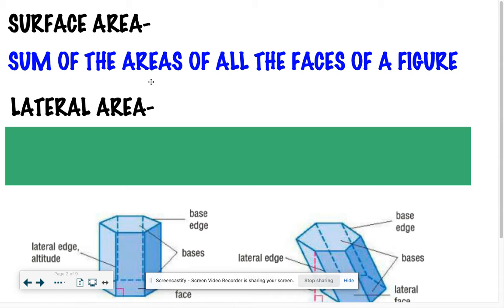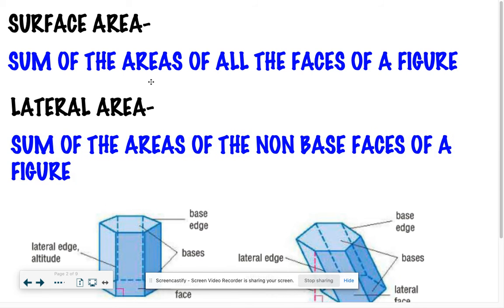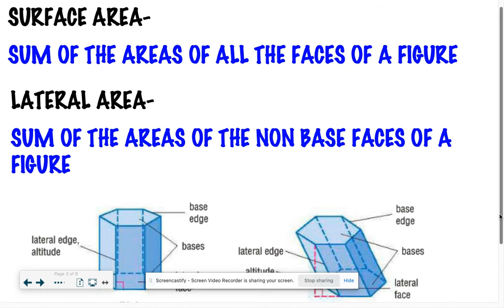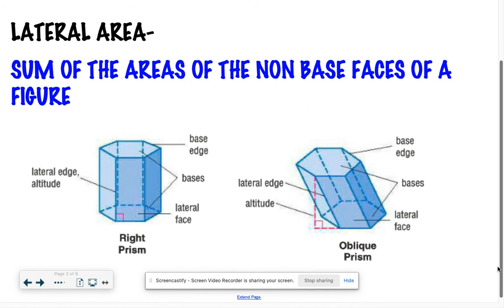We can break up surface area into two different pieces. The first one is your lateral area, and that's the sum of the areas of the non-base faces of your figure. If we look here, your bases of your figure are the two parallel faces - the ones that do not touch. In this case, these two hexagons don't touch each other; they're parallel to each other. Those would be your bases. And then these rectangular walls, all these rectangles that build up this prism here, would be considered your lateral area.